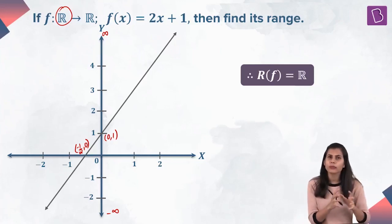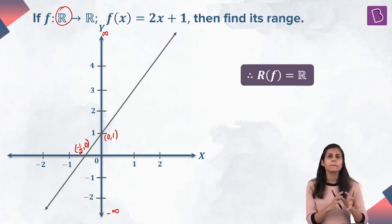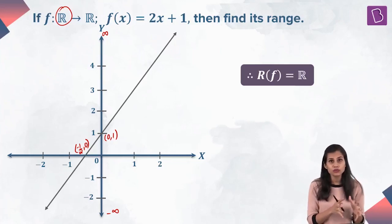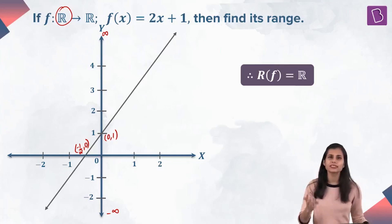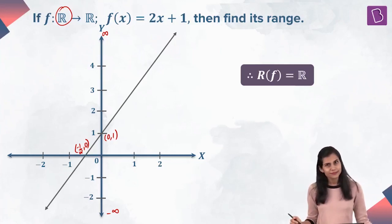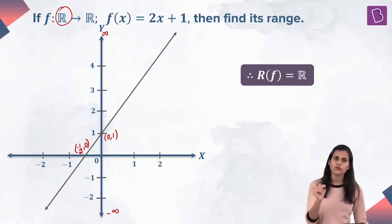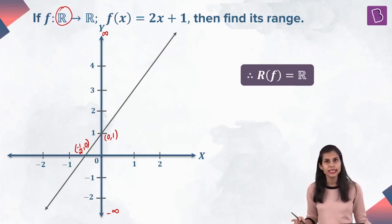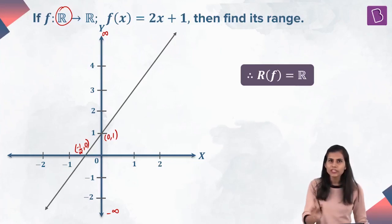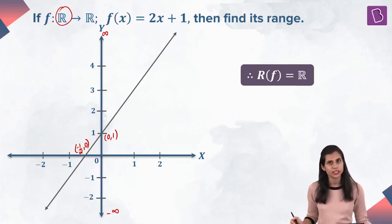But when you are restricting your domain and making it smaller — be it non-negative reals, be it whole numbers, be it a finite set consisting of {1, 2, 3} — correspondingly the range is going to change because the outputs produced are going to change. So from now on, please keep in mind: whenever you have to find the range of a function, first ensure what is the domain corresponding to which you want to find the range — is it the actual entire complete domain or some restricted portion of it? Then only proceed to find the range.